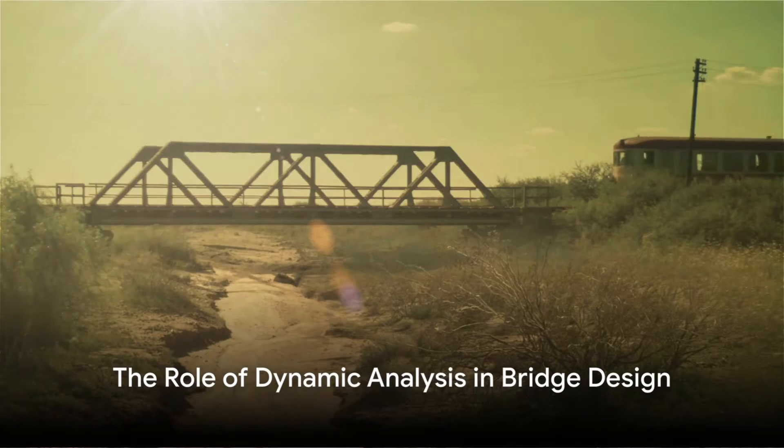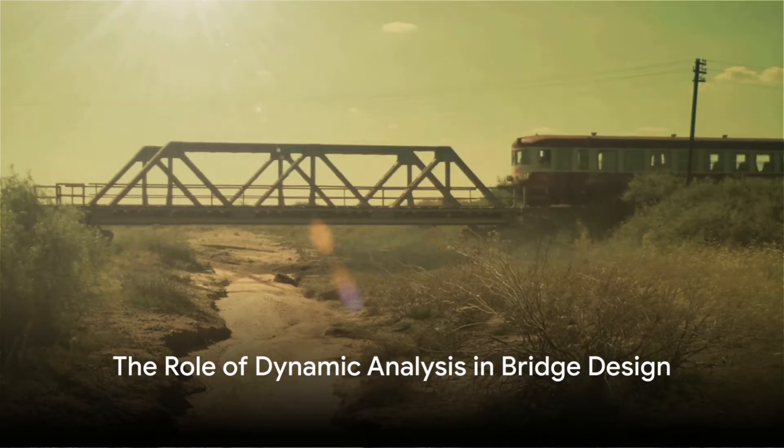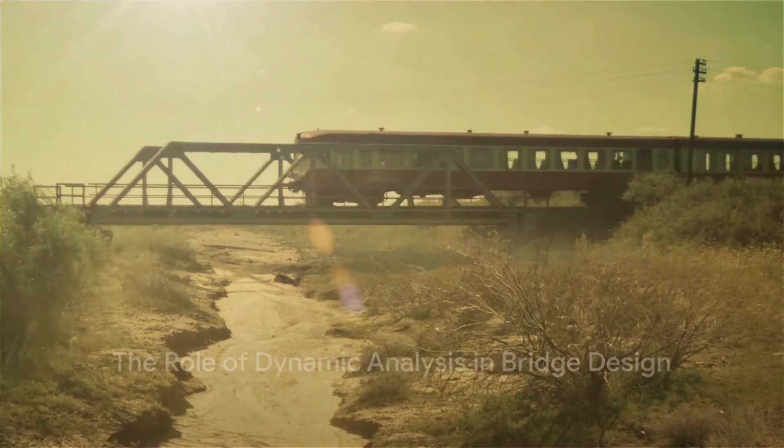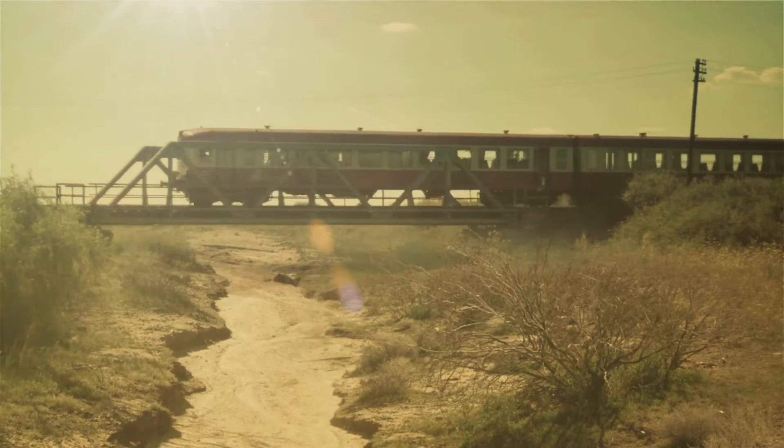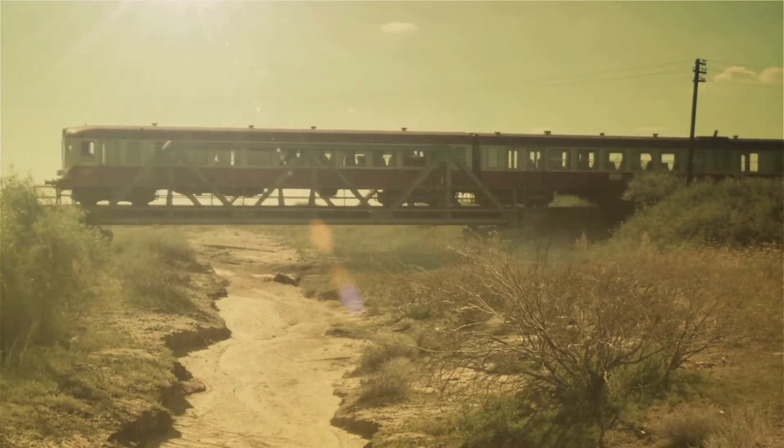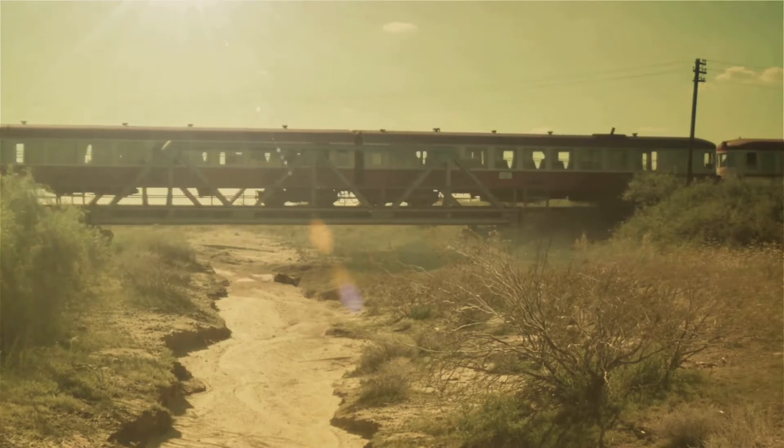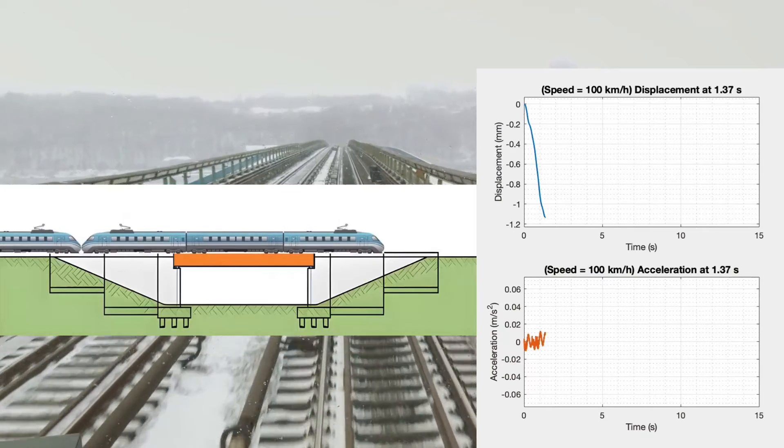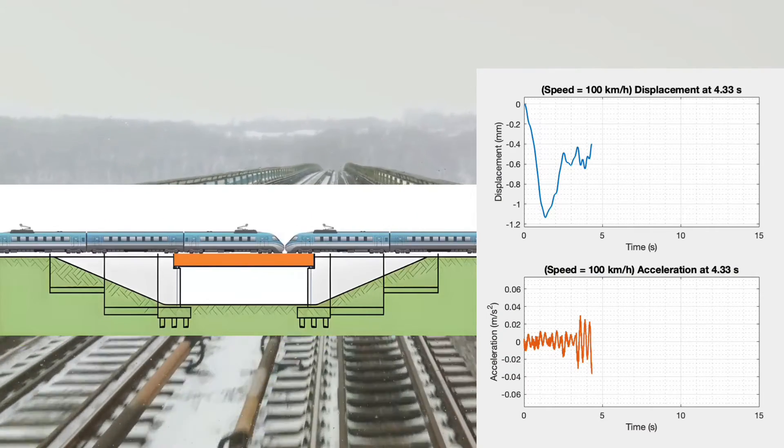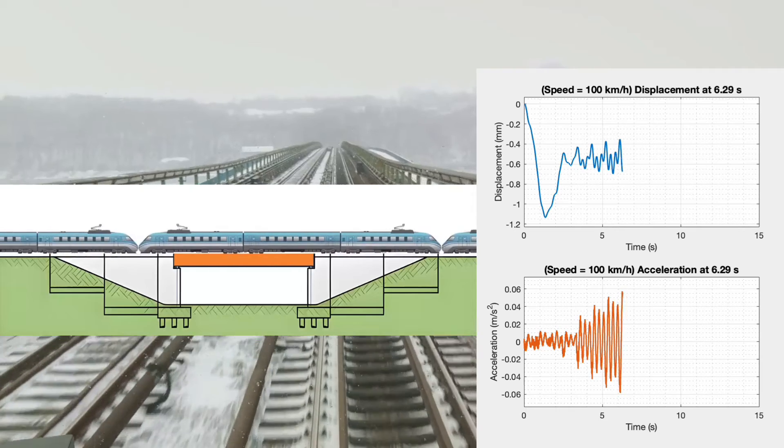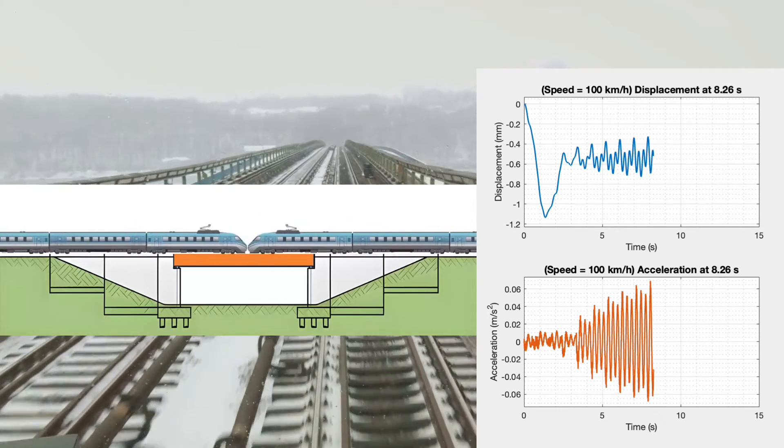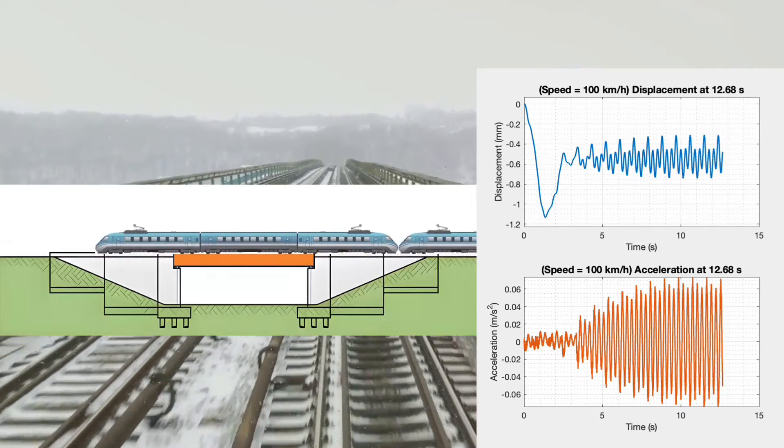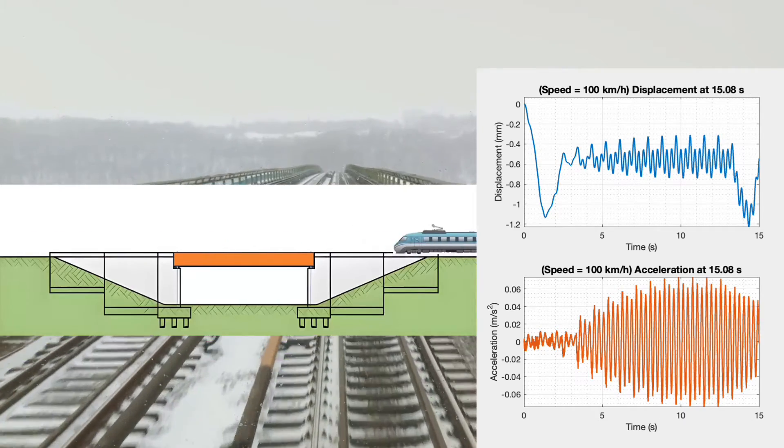Let's delve into dynamic analysis for simple span beams. When a train, viewed as a system of moving loads, crosses a bridge, it induces oscillations along the bridge's length. This dynamic interaction brings two critical design considerations to the forefront: the vertical displacement and acceleration of the bridge due to the moving load. For simple span bridges, peak displacement and acceleration typically occur at mid-span. Our video demonstrates these effects as a train travels at 100 km per hour across the bridge.